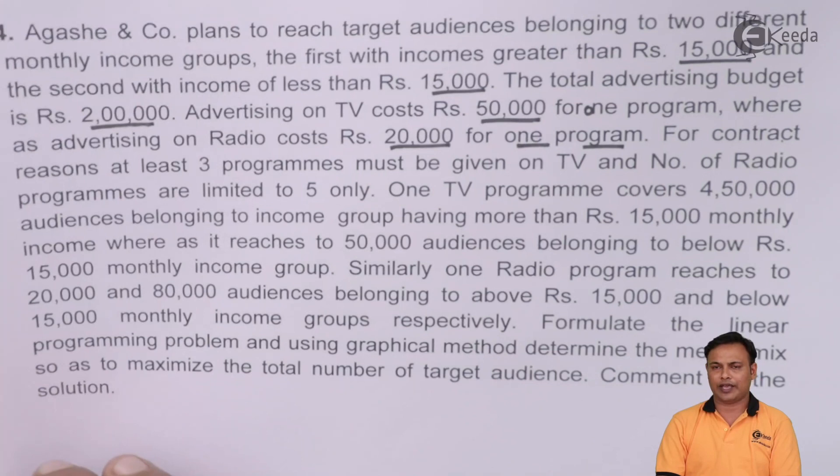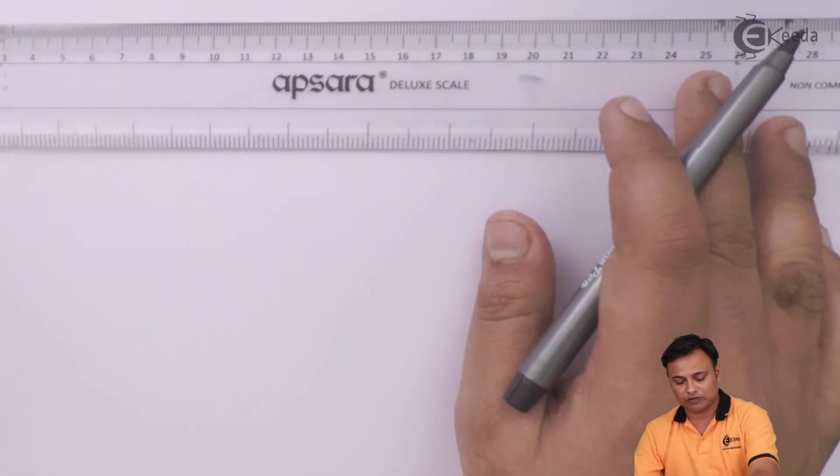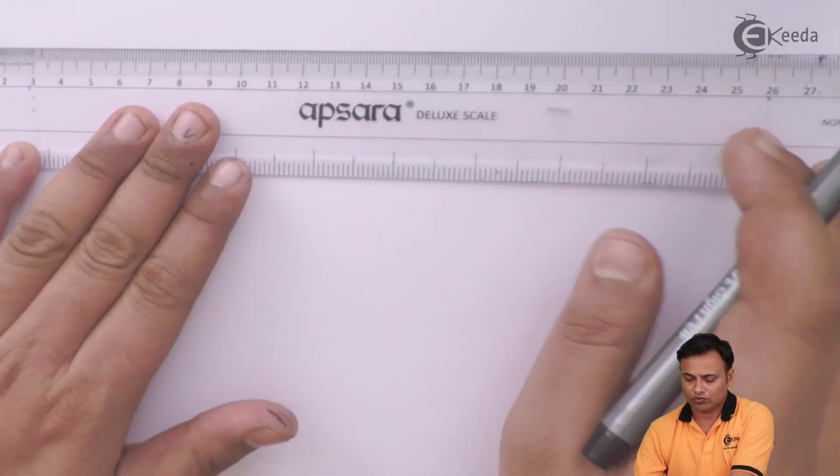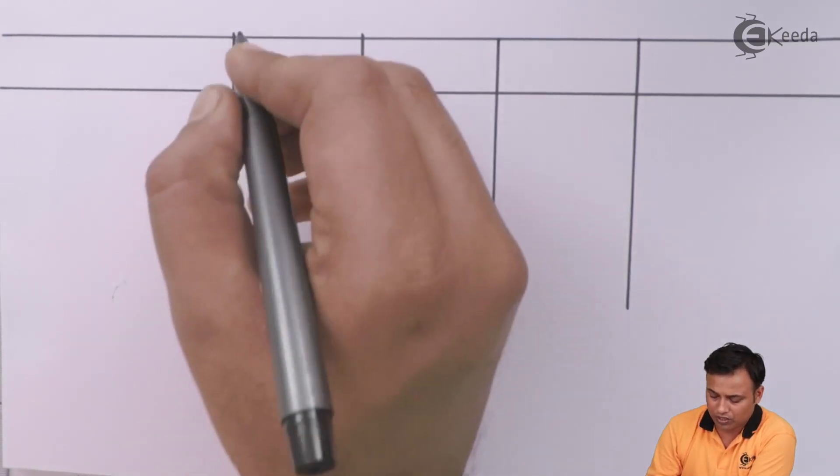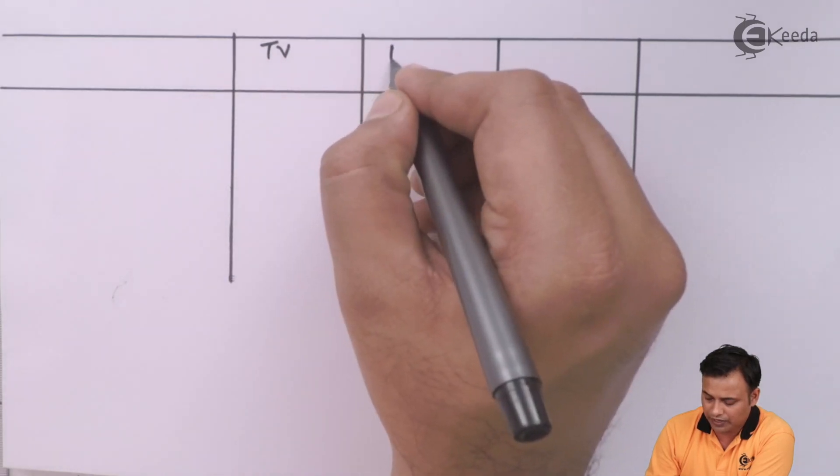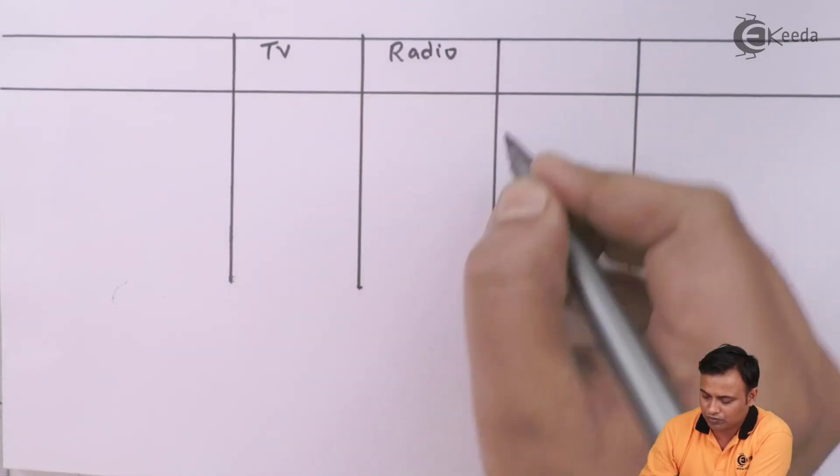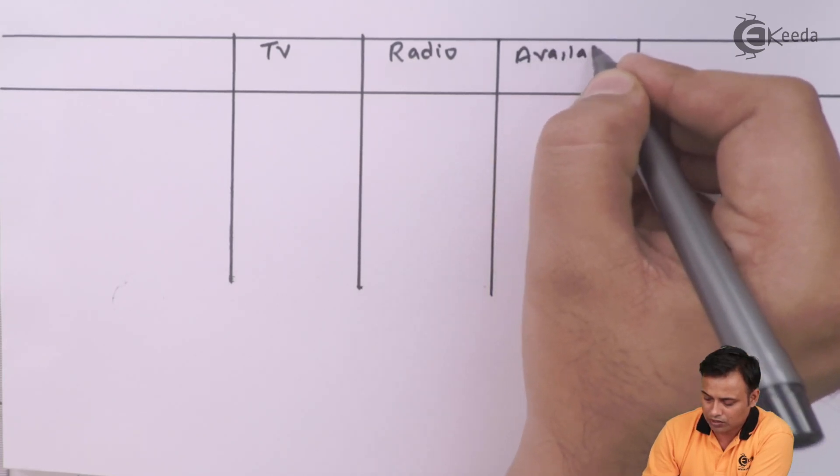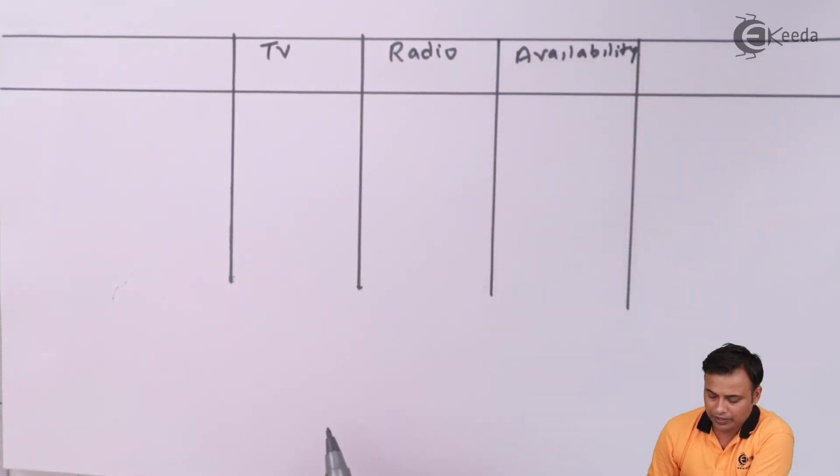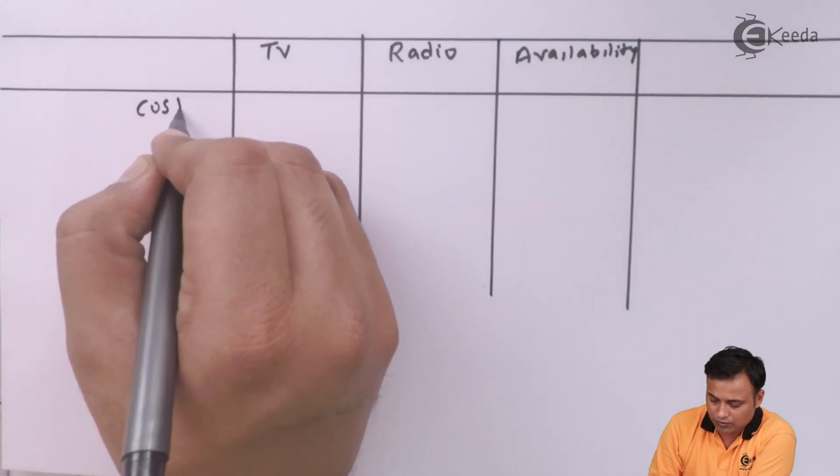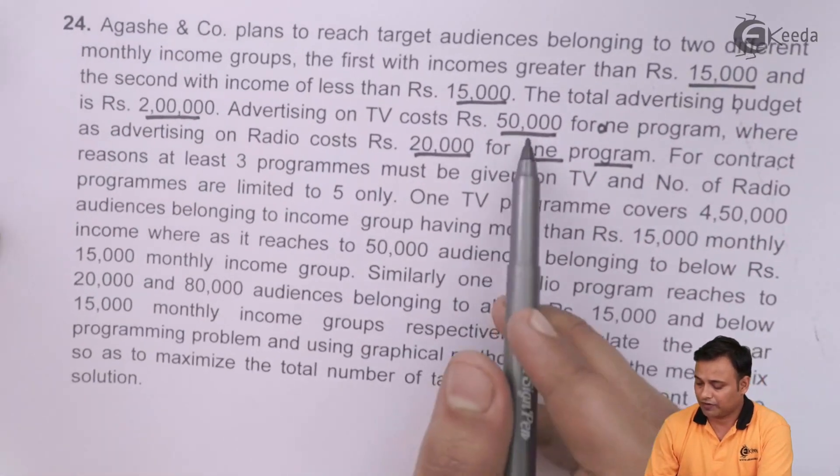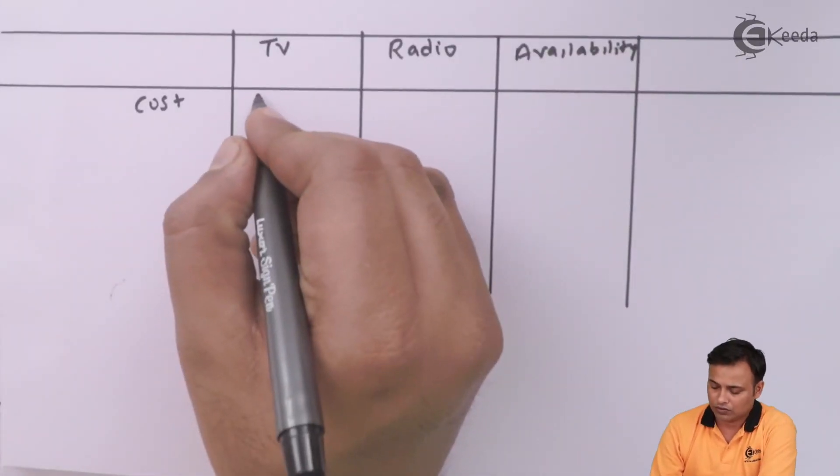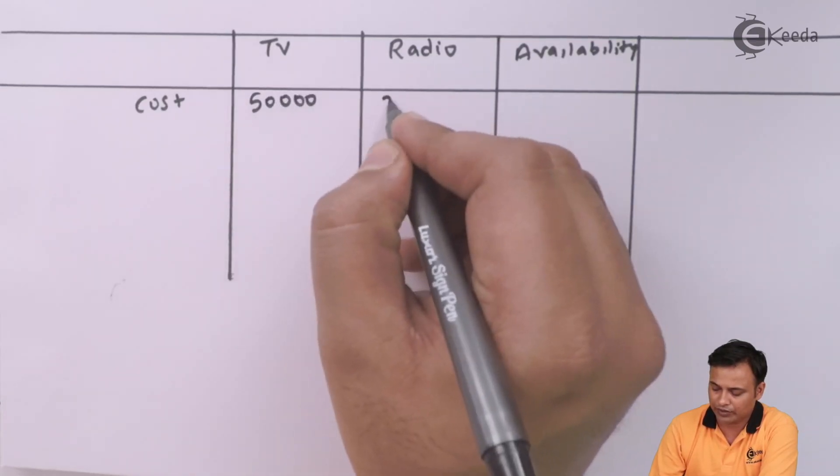So here, we need to work out the same thing. We will make two columns, one for TV and one for radio. So here is my columns. In my first column, I will note down the first media that is TV and in the second, we will note down the second media that is radio. And here is my supply or the availability. So what is the cost? The cost involved is 50,000 and radio is 20,000. So here I will write for TV it is 50,000 and for radio it is 20,000.